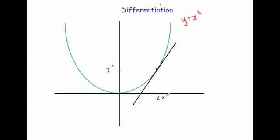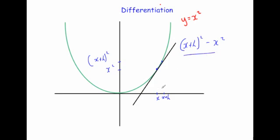If I go across that tiny amount h, the x-coordinate of the second point is x plus h. The height, remember, is found by squaring, so that's going to be (x plus h) squared. Let's work out the gradient of this chord between those two points, pretending they're really close together. So it's y2 minus y1 over x2 minus x1: (x plus h) squared subtract x squared, all over (x plus h) subtract x.